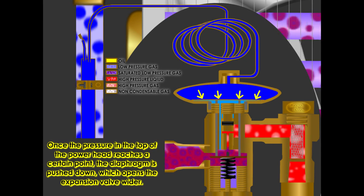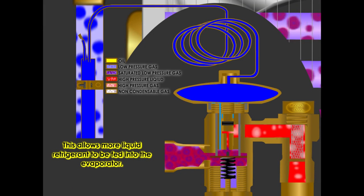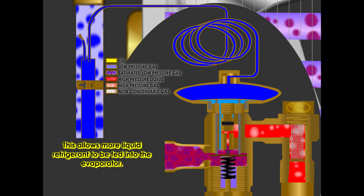Once the pressure in the top of the power head reaches a certain point, the diaphragm is pushed down, which opens the expansion valve wider. This allows more liquid refrigerant to be fed into the evaporator.